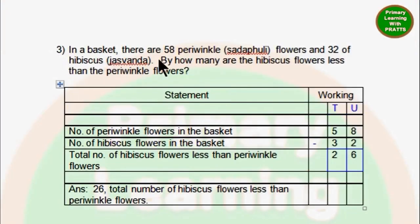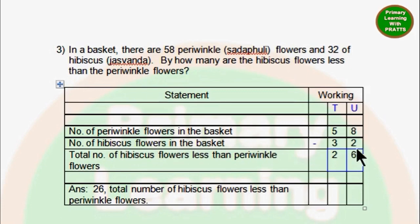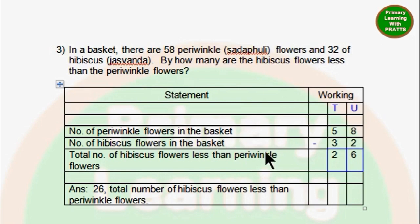Third sum. In a basket there are 58 periwinkle or sandhapulim flowers and 32 hibiscus or jaswanda flowers. How many more are the hibiscus flowers less than the periwinkle flowers? Number of periwinkle flowers in the basket: 58. Number of hibiscus flowers in the basket: 32. Total number of hibiscus flowers less than periwinkle flowers — because that is what they are asking us. Remember 'less than' — don't get confused. 8 minus 2 is 6, 5 minus 3 is 2. Answer: 26. Total number of hibiscus flowers less than periwinkle flowers.